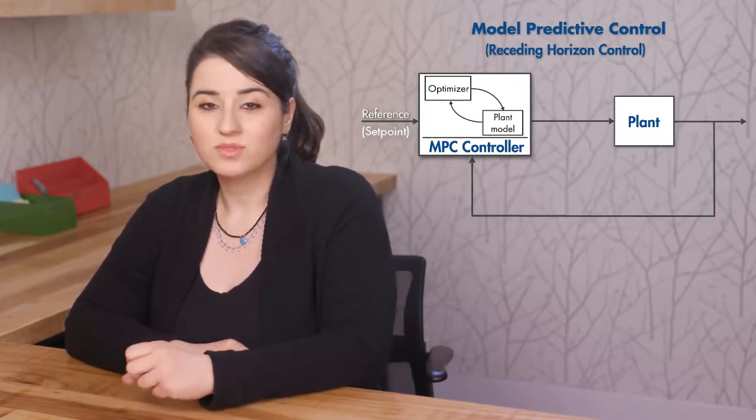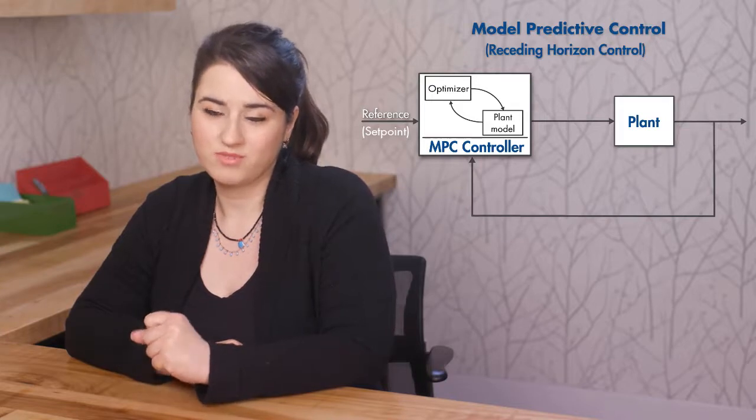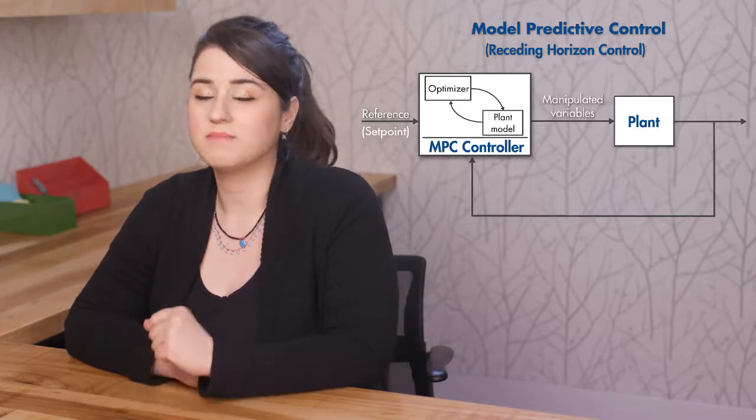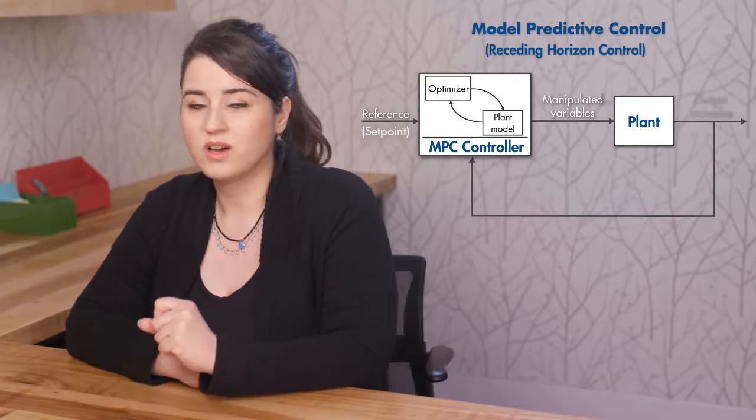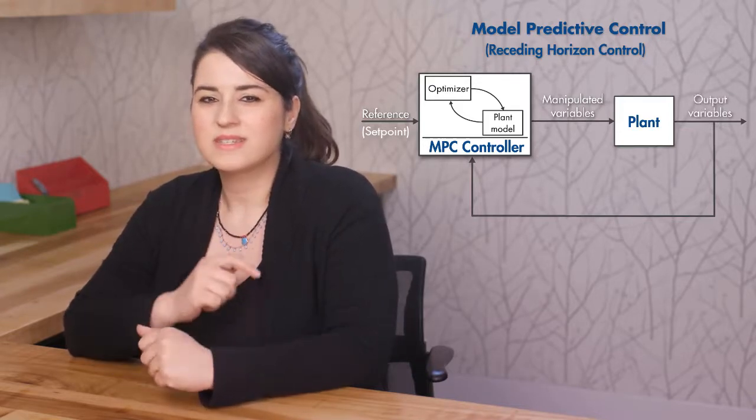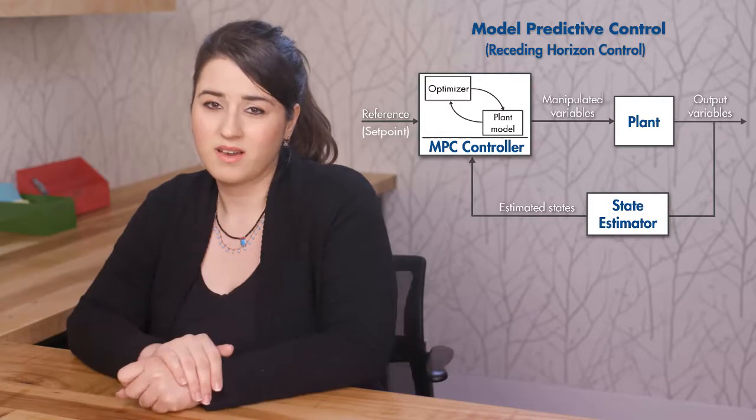But in textbooks, you'll find generic terminology used for MPC. For example, the signals computed by the controller and sent to the plant are referred to as manipulated variables. Whereas the plant outputs are called output variables. You may also notice a state estimator in the feedback diagram.